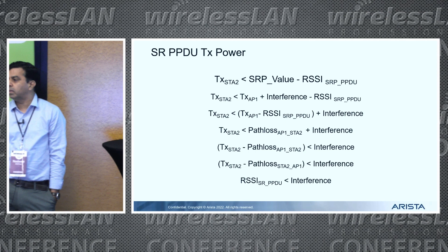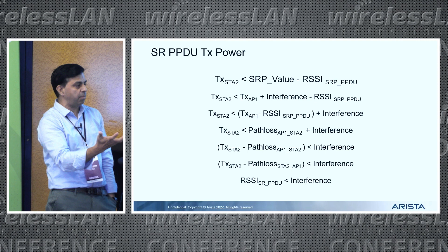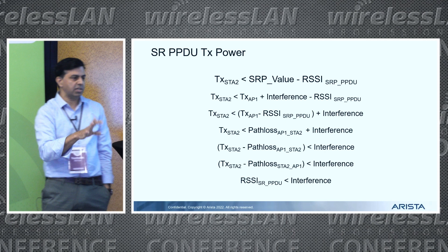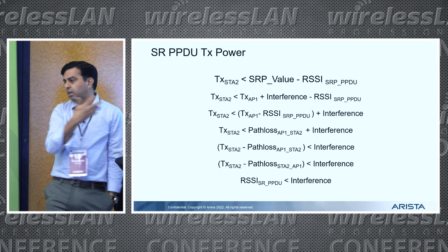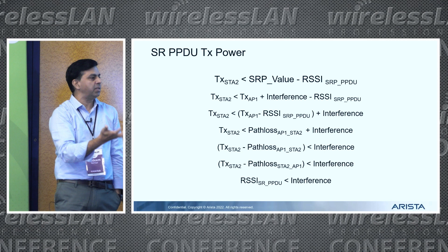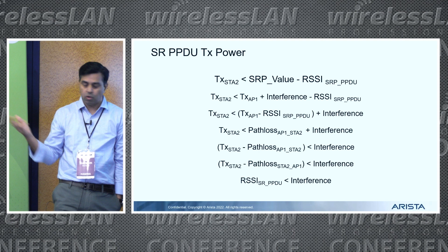This scheme is more deterministic in nature because every station knows exactly what the upper power limit is — it's all simple math. The challenge is that in every trigger frame, the AP has to insert this figure. The hard part is on the AP side: the AP needs to figure out what the acceptable interference level is and communicate that to other stations hearing the transmission.